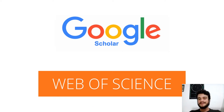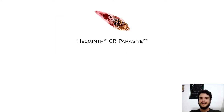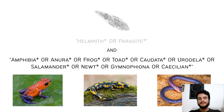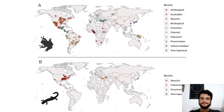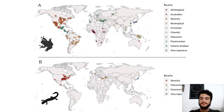To build our dataset, we did a systematic search of literature on Google Scholar and Web of Science, where we combined helminth or parasite groups — the parasitic worms — with the current living amphibian orders: the anurans, the salamanders, and the caecilians. This is the geographical spread of our dataset. We got data for more than 600 populations of anurans and more than 90 populations of salamanders. For anurans, we got data on more than 300 species, while for salamanders around 30.